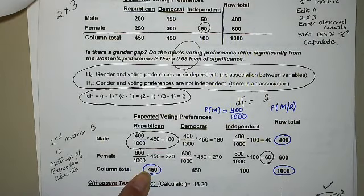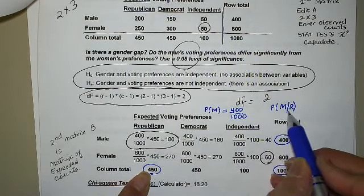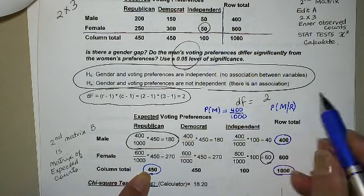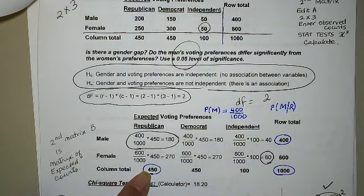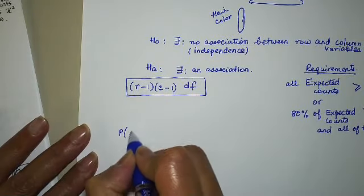So whatever cell I'm about to come up with here, divided by 450, should be equal to this probability, 400 over 1,000. And if that is the case, then it would mean that male and Republican are independent. Because probability of male given Republican is equal to the probability of male. You follow me?